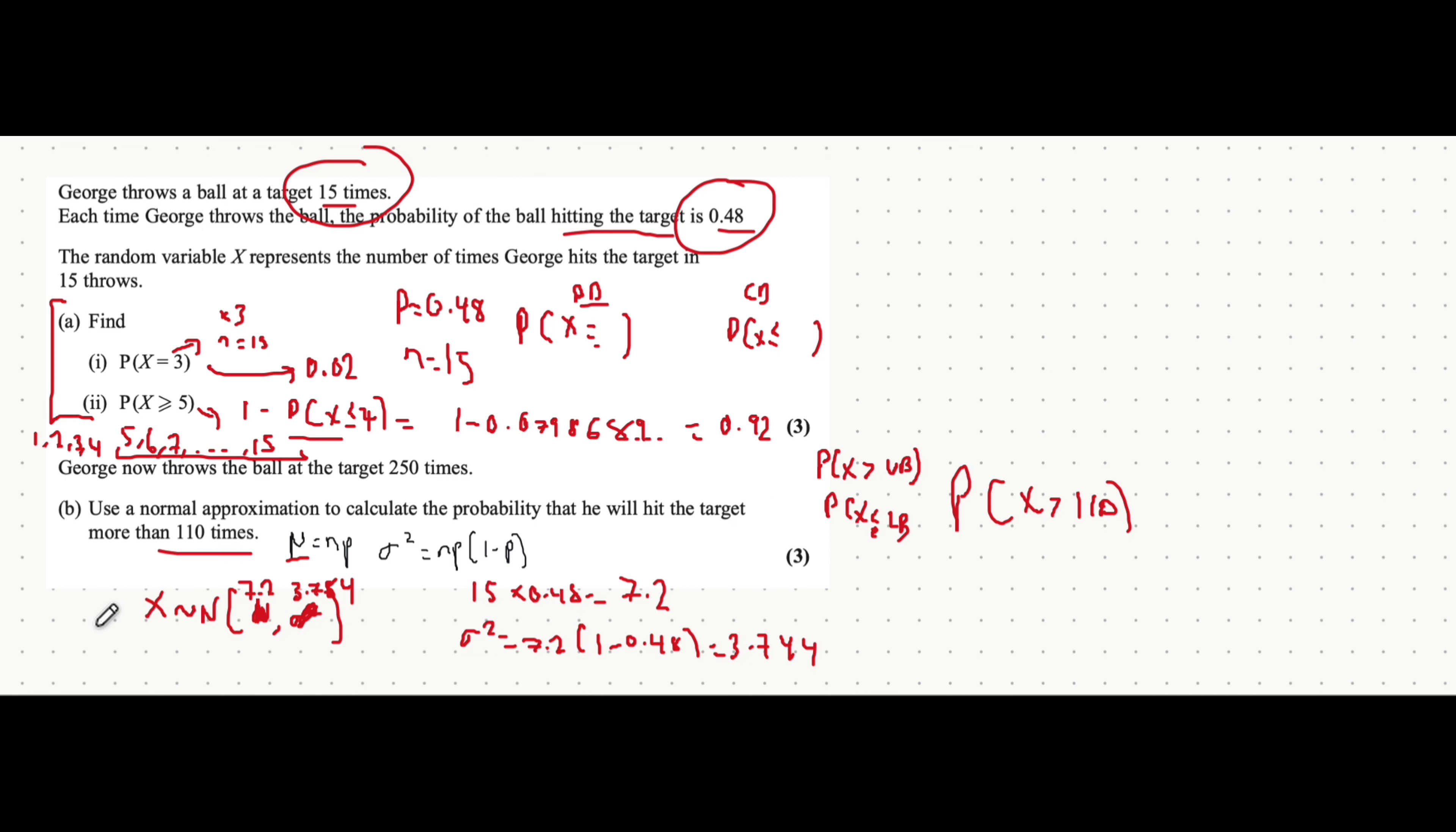So it also involves values between, let's say, 110 and 111. Here we're doing a greater than. So we need to find the upper bound of 110. Which would be 110.5. And that's the value that you put in, into the normal distribution.